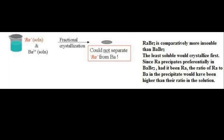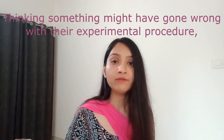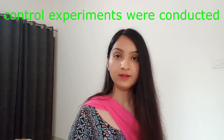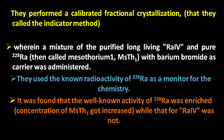Because radium was known to co-precipitate preferentially with barium bromide, the ratio of radium to barium in the precipitate had to be higher than the ratio in the solution as a result of the fractional crystallization process. To their surprise, Hahn and Strassmann observed the radium activities to be evenly distributed among the successive barium bromide fractions. Thinking something might have gone wrong, control experiments were conducted using known radium isotopes. They performed a calibrated fractional crystallization they called the indicator method.